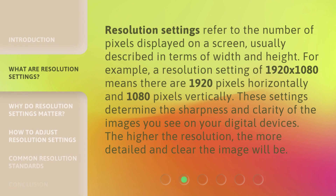Resolution settings refer to the number of pixels displayed on a screen, usually described in terms of width and height. For example, a resolution setting of 1920 by 1080 means there are 1920 pixels horizontally and 1080 pixels vertically. These settings determine the sharpness and clarity of the images you see on your digital devices. The higher the resolution, the more detailed and clear the image will be.